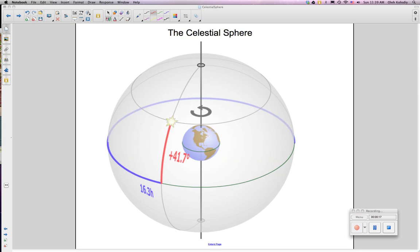Earth rotates west to east, as shown in this picture. And the celestial sphere therefore rotates east to west in this direction.